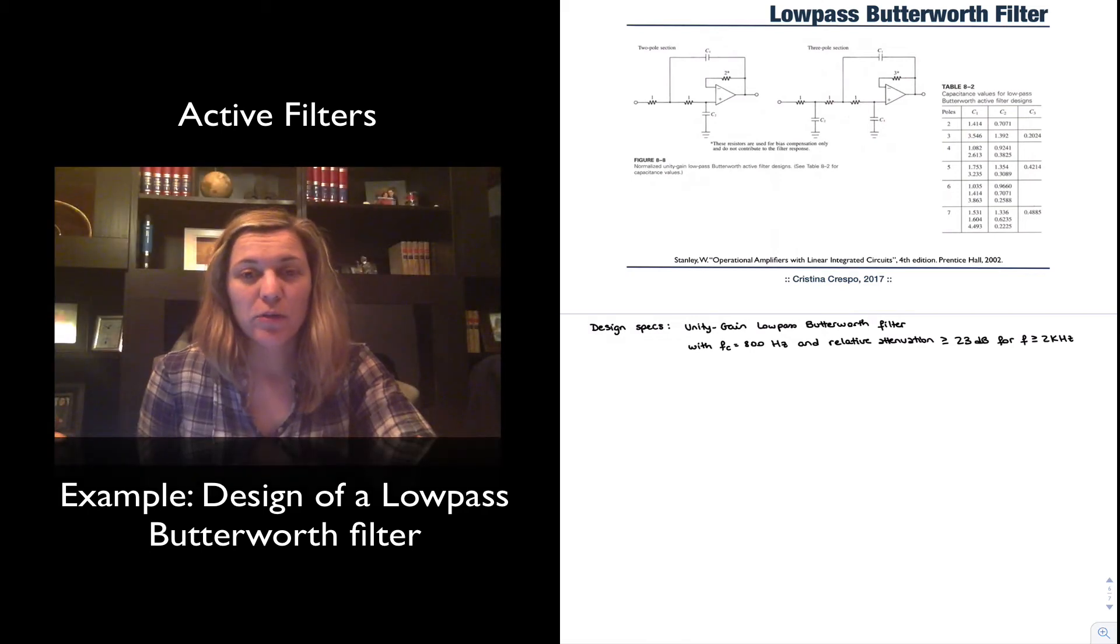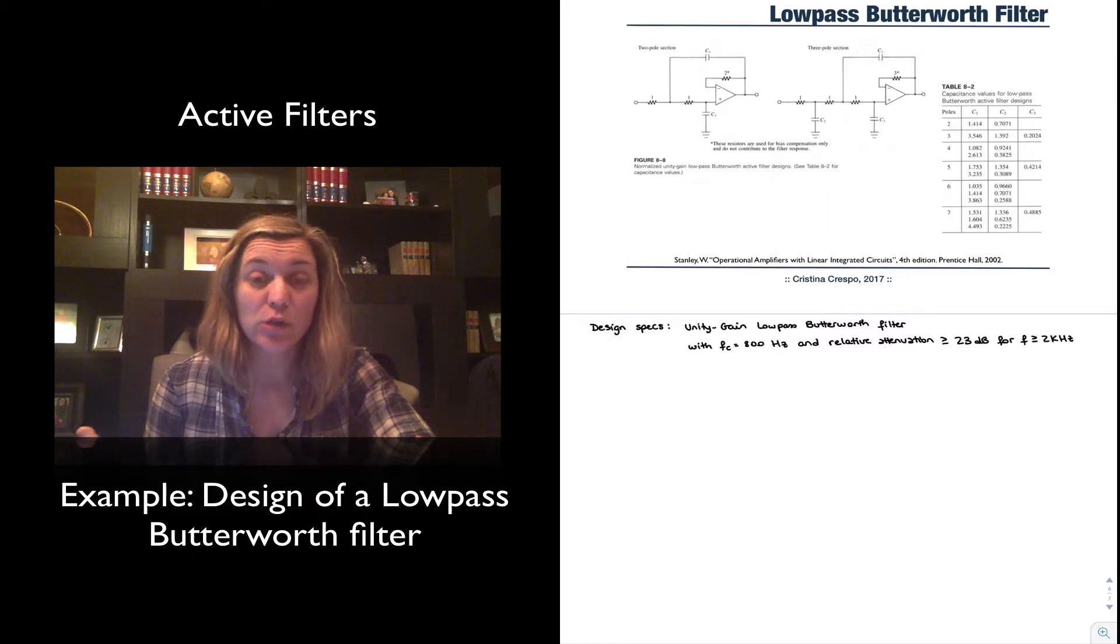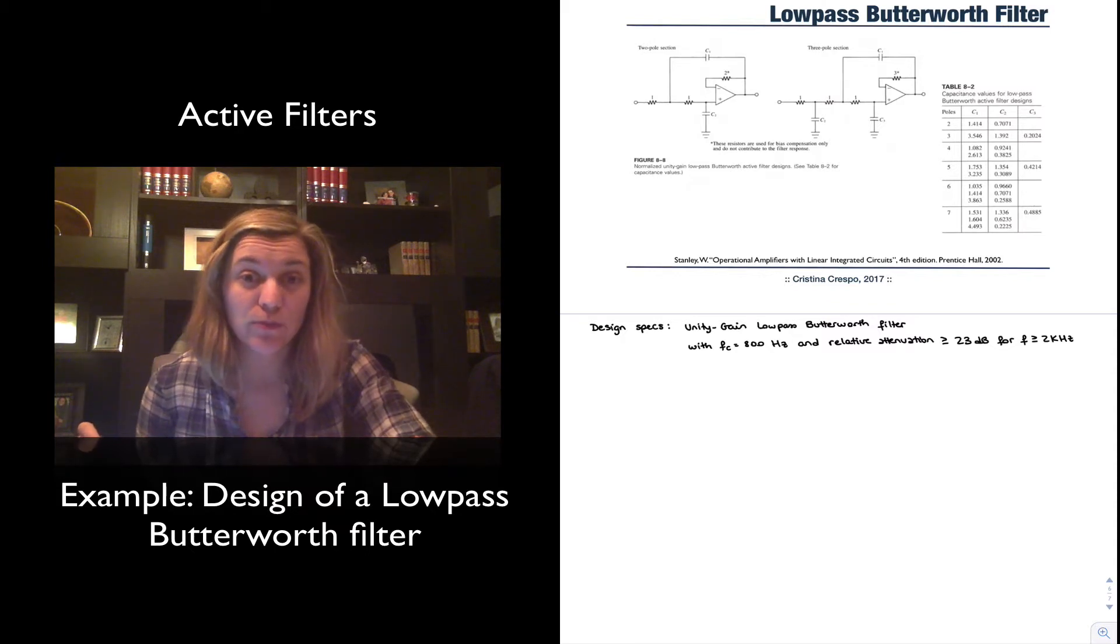Hello. So we're finally completing our first design of a Unity Gain Butterworth filter. In this case it's going to be a Unity Gain low-pass Butterworth filter with the following specs: a cutoff frequency of 800 Hz and relative attenuation of more than 23 dB for a frequency greater than or equal to 2 kHz. So basically 2 kHz is the beginning of our stop band.